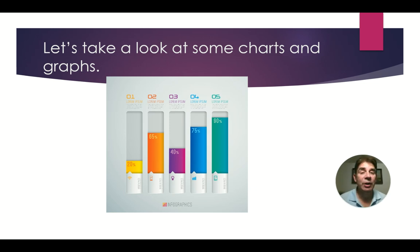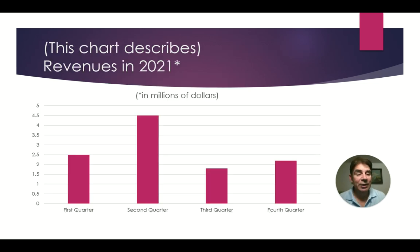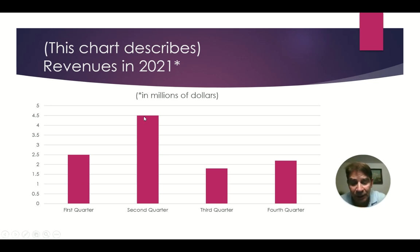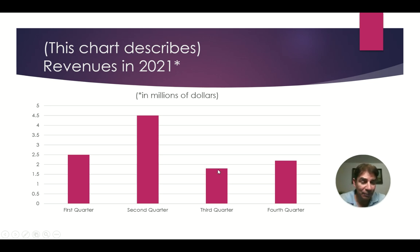Let's take a look at some charts and graphs and see if you can describe these in English. The first one is talking about revenues in 2021, in millions of dollars. Sales stood at $2.5 million in the first quarter. Then they rose sharply to $4.5 million in the second quarter. Then they dropped dramatically to $1.8 million in the third quarter. Then they rose slightly to $2.2 million in the fourth quarter.